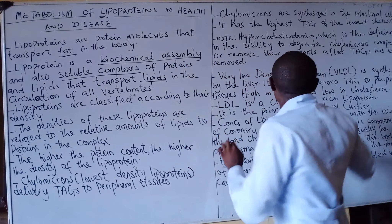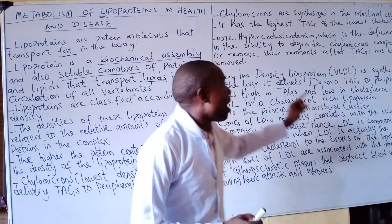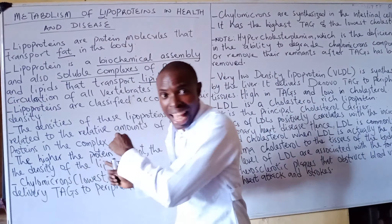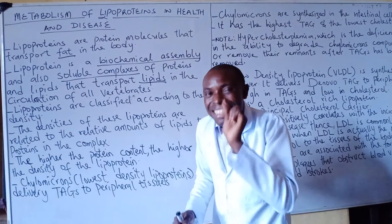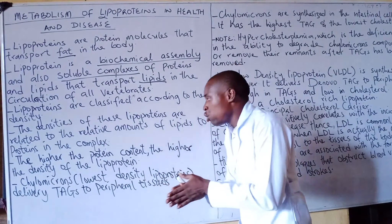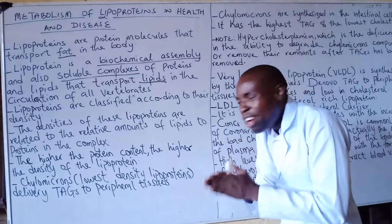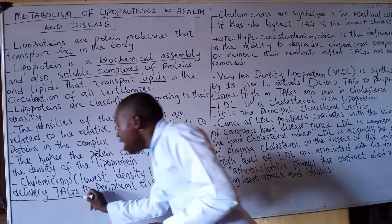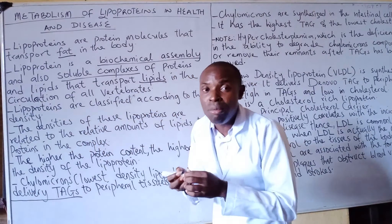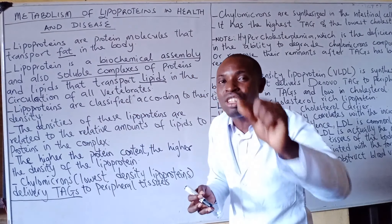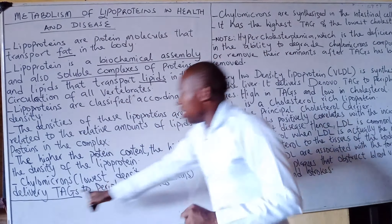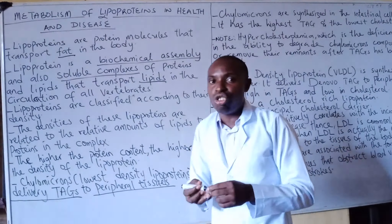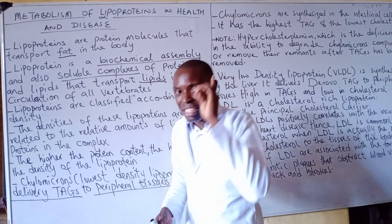Chylomicrons are synthesized only in the intestinal cell. The function of chylomicrons is the delivery of TAG (triacylglycerol), which comes from dietary fat, to peripheral tissues.